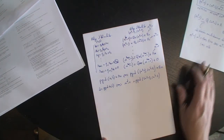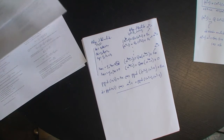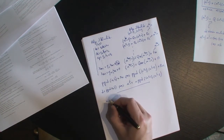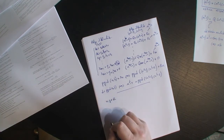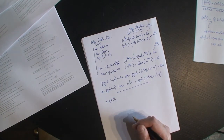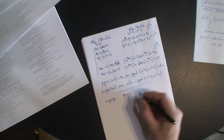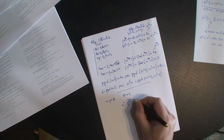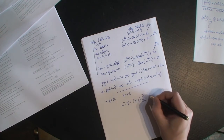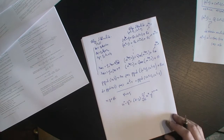On va passer à l'exercice suivant. Donc, c'est l'exercice 20. Je vais me donner X et Y des réels. On souhaite montrer par récurrence sur n que pour tout n supérieur à 1, x puissance n moins y puissance n est factorisable par x moins y. Le facteur, c'est la somme des x^k fois y puissance n moins 1 moins k.